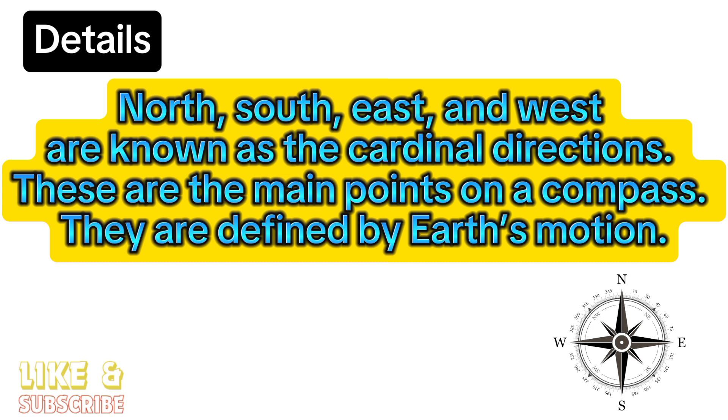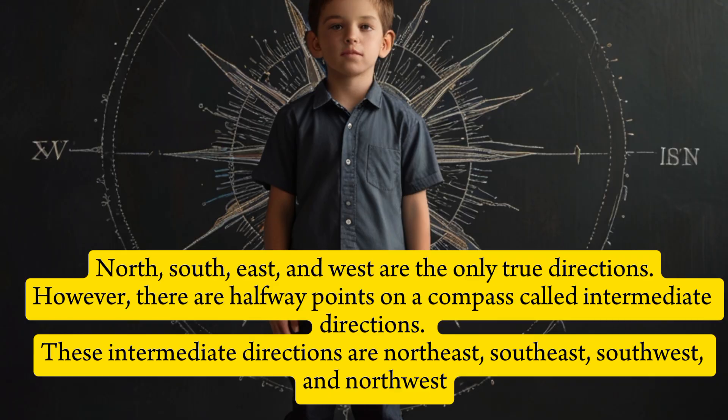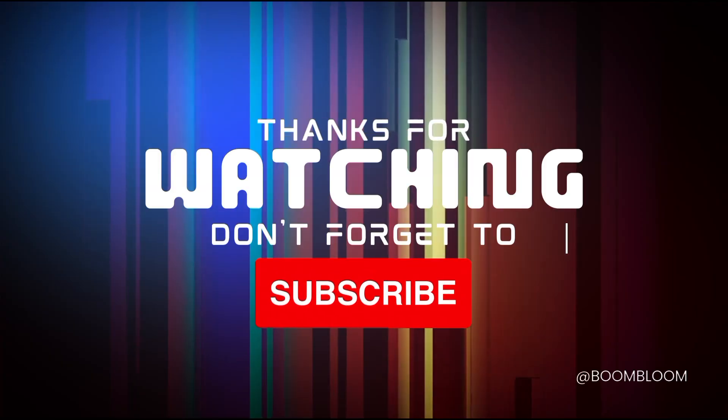Cardinal directions are defined by the Earth's motion. North, south, east, and west are the main directions. However, there are also points on a compass called intermediate directions. These intermediate directions are northeast, southeast, southwest, and northwest. Thanks for watching our video.